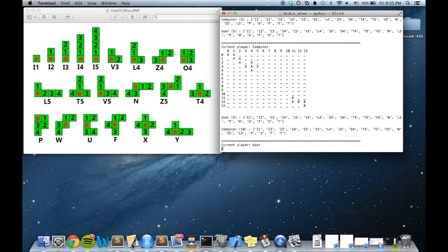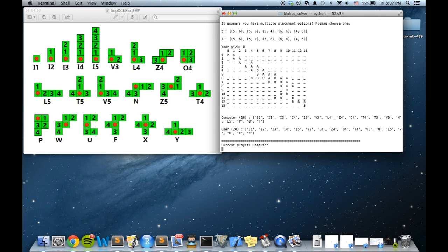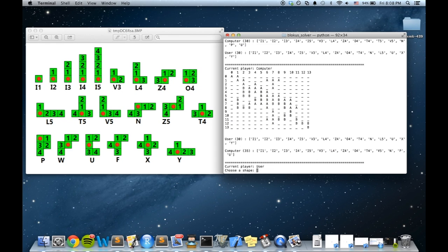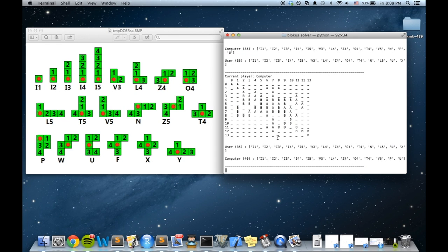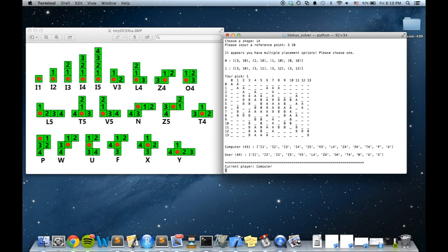We created a user interface that allows people to play against our players and choose which one to play against. Here the user is playing against the Minimax player. An image pops up after the instructions to help the player win placing pieces. The player chooses a shape and reference point indicated by red dots in the picture. If there are multiple options, our UI lets them choose the one they want.